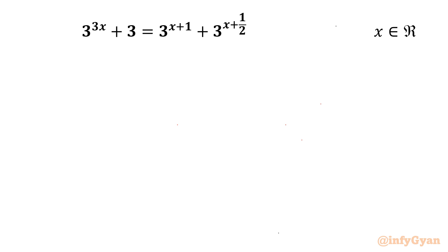The equation is 3 raised to the power (3x + 3) equal to 3 raised to the power (x + 1) plus 3 raised to the power (x + 1/2). We have to find only real solutions.